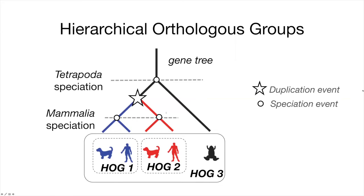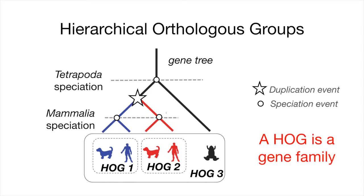Sometimes it is useful to deal with groups of genes which are derived from a single gene in an ancestral species. This is what we refer to as hierarchical orthologous groups, or HOGs. HOGs are clusters of orthologues and paralogues defined at a given taxonomic level of interest. In this example gene tree, we have three HOGs nested and defined at particular taxonomic levels. HOGs relate genes from multiple species and also give a finer level of granularity depending on your specific taxonomic level of interest. A HOG is another way of looking at a gene family. For more information on HOGs, see our YouTube video, 'What are HOGs?'